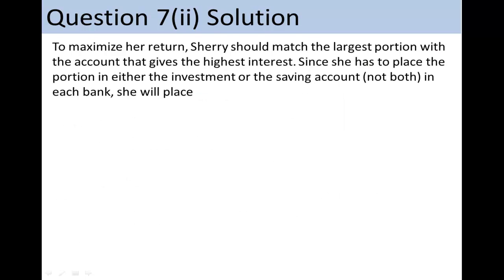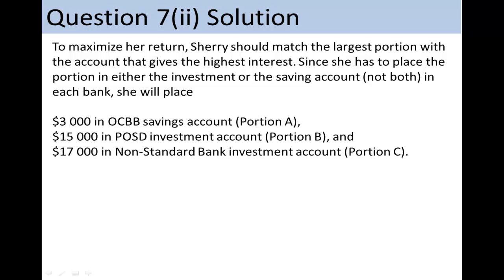Solution to Question 7, Part 2. To maximize her return, Sherry should match the largest portion with the account that gives the highest interest. Since she has to place the portion in either the investment or the saving account, but not both, in each bank, she will place $3,000 in OCBB savings account, $15,000 in POSD investment account, and $17,000 in non-standard bank investment account.